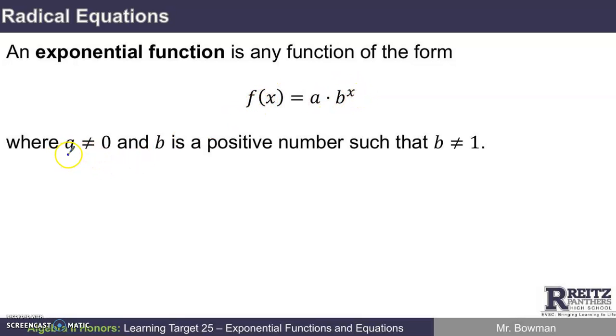There are some restrictions. a can't be zero. If a were zero, then you'd have zero times anything and the function would just be f of x is zero, which is really just a linear function, a horizontal line through the origin.